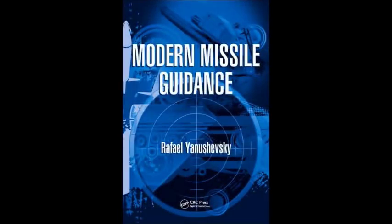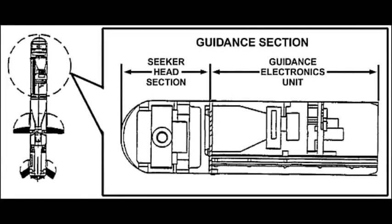The missile knows where it is at all times. It knows this because it knows where it isn't. By subtracting where it is from where it isn't, or where it isn't from where it is, whichever is greater, it obtains a difference or deviation.